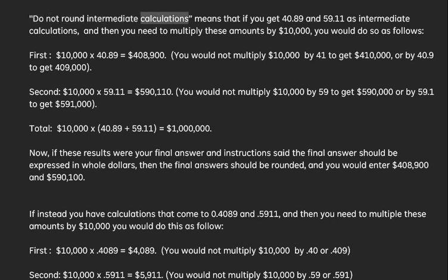Do not round intermediate calculations means that if you get 40.89 and 59.11 as intermediate calculations, and then you need to multiply these amounts by $10,000, you would do so as follows.